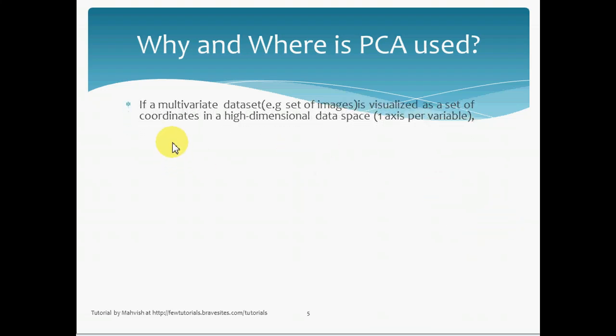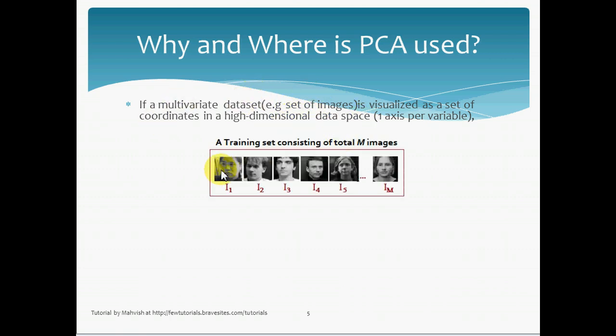Now, in PCA, if a multivariate data set is visualized as a set of coordinates in a high dimensional data space with one axis per variable, for example, in face recognition, that multivariate data set would be a set of images. You see, a training set consisting of total M images like we have over here, and each of these images is going to be of N by N dimensions. So that means that there will be total of N squared dimensions or N square pixels.